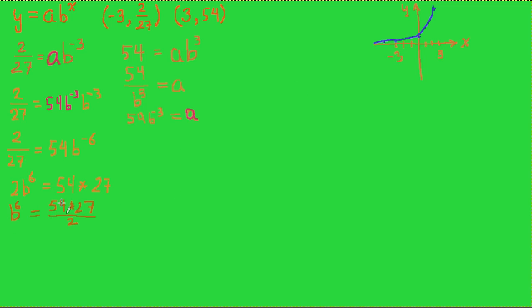So b to the sixth is equal to 54 times 27 divided by 2. And the 2 will cancel with this 54, so that becomes 27 times 27.